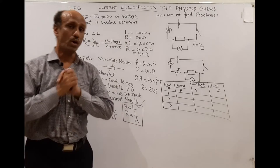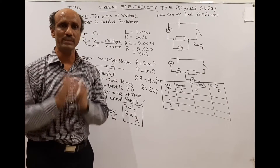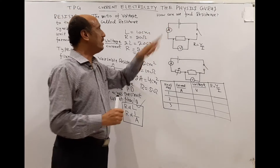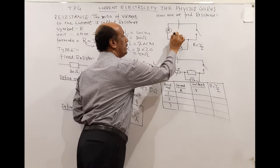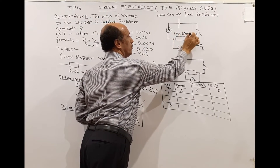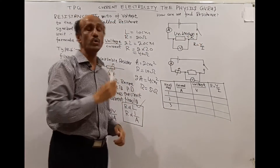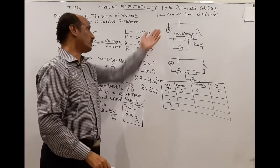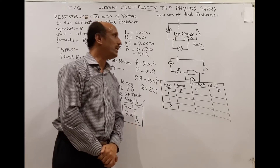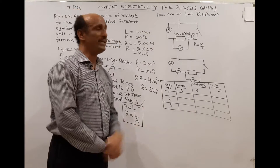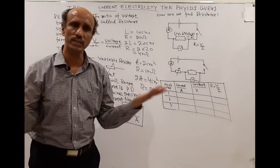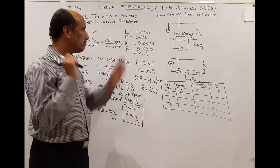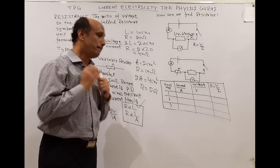A common exam question is how to find resistance using a circuit diagram. Use the circuit symbols you have learned: place an ammeter in series and a voltmeter in parallel across the unknown resistance component. When you close the switch, the ammeter and voltmeter give readings, and you simply substitute the values into the formula R = V/I to get the value of the unknown resistance.